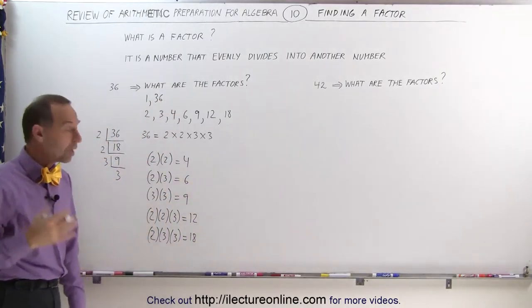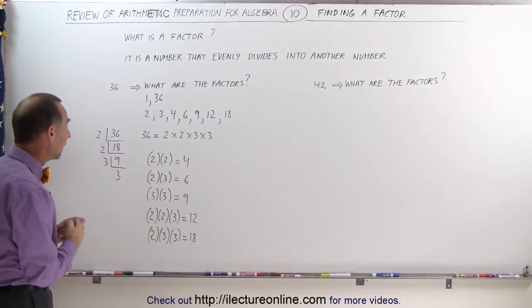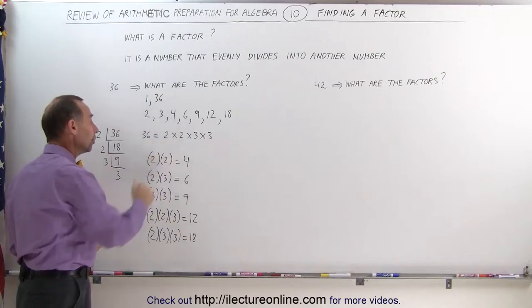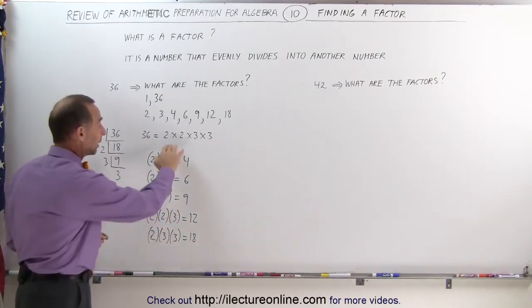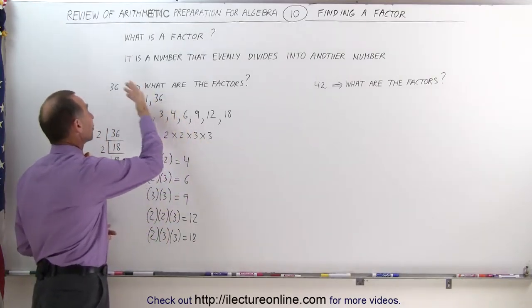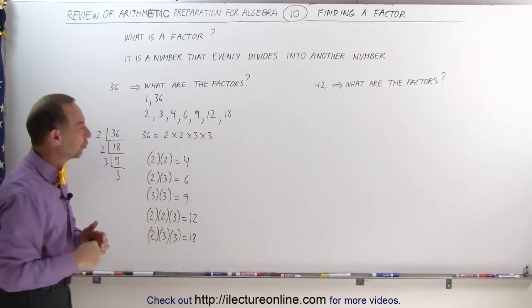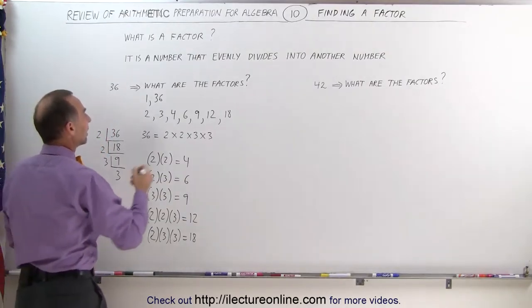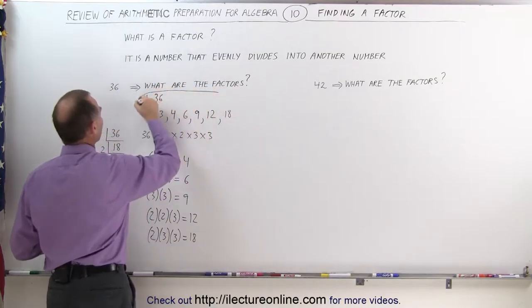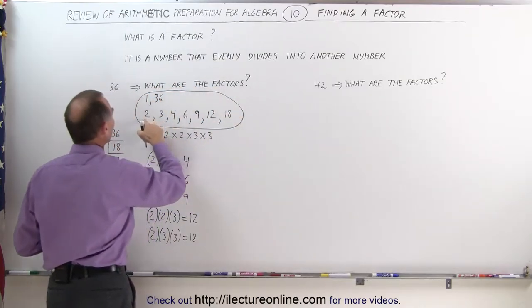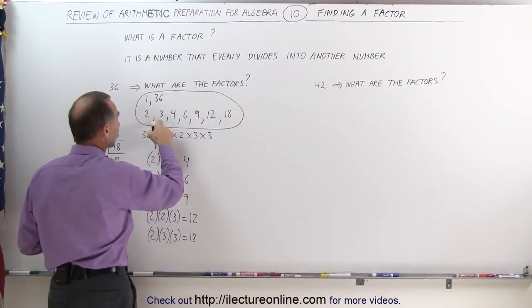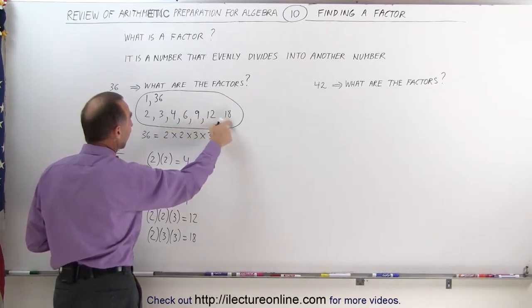And now we've exhausted all the combinations that we can multiply. If we multiply any 2 or 3 or 4 numbers together, remember, when we multiply all of them together, we get 36, which is, as we already know, also a factor of 36. It turns out then, that all the factors of 36 together are the numbers 1, 2, 3, 4, 6, 9, 12, 18, and 36.